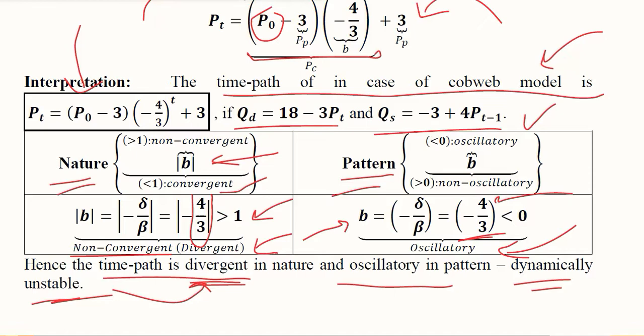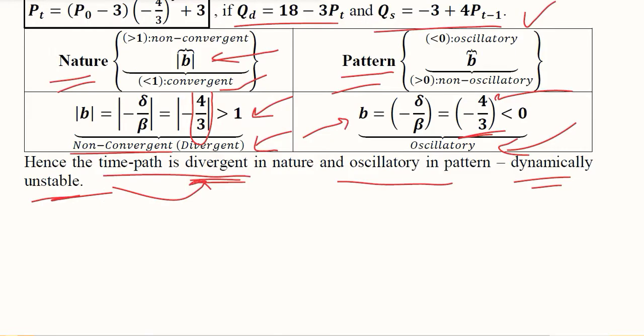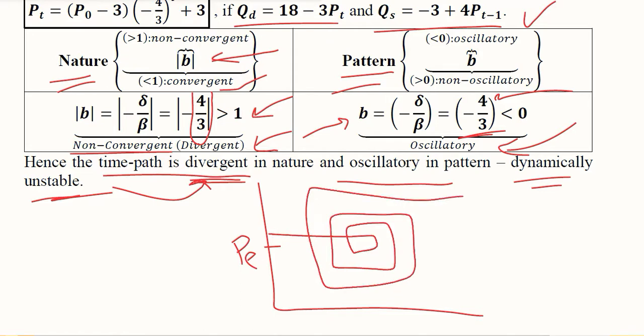We can try to plot this situation that we have. We can make a rough sketch here. If this is the equilibrium price, it will start from here somewhere and it will go in this fashion. This would be the diagram. It is not precise but definitely it gives us the rough idea of how we can plot this situation.